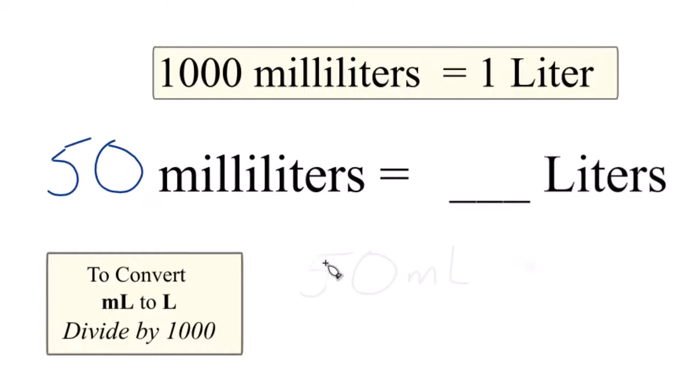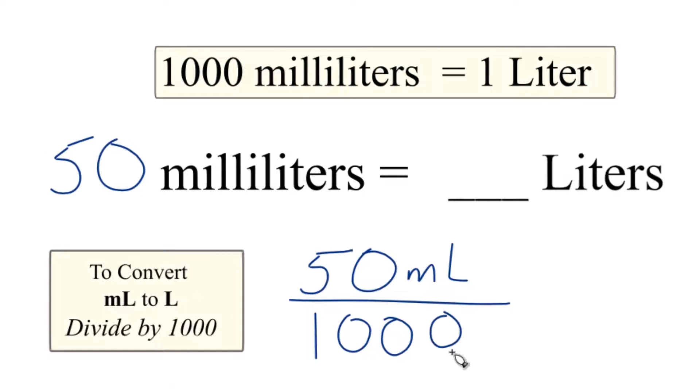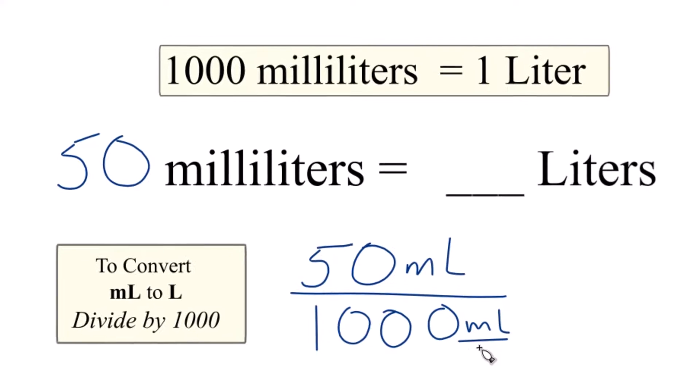So we take our 50 milliliters, we divide that by 1,000. And that 1,000, there are 1,000 milliliters in 1 liter. So we can call that milliliters over liter.